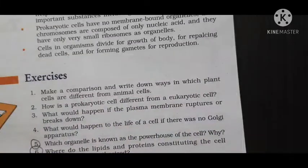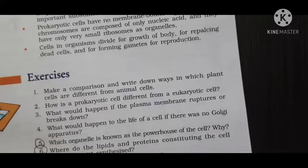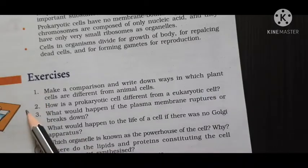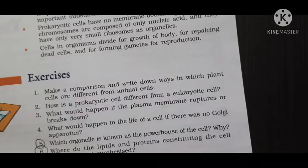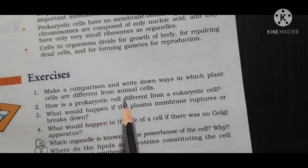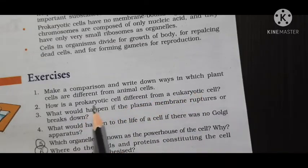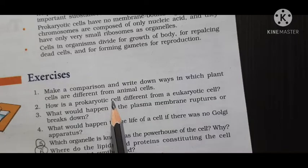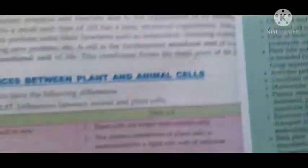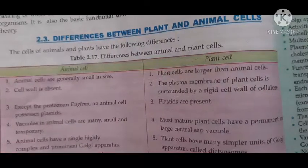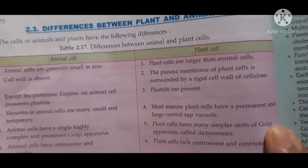Now please open page number 67. Here in page number 67 I gave question number one and question number two for homework. Question number two I discussed with you in the class. Now question number one answer: make the comparison and write down the ways in which plant cells are different from animal cells. Whenever students difference is asked, you should always write in a tabulated form.